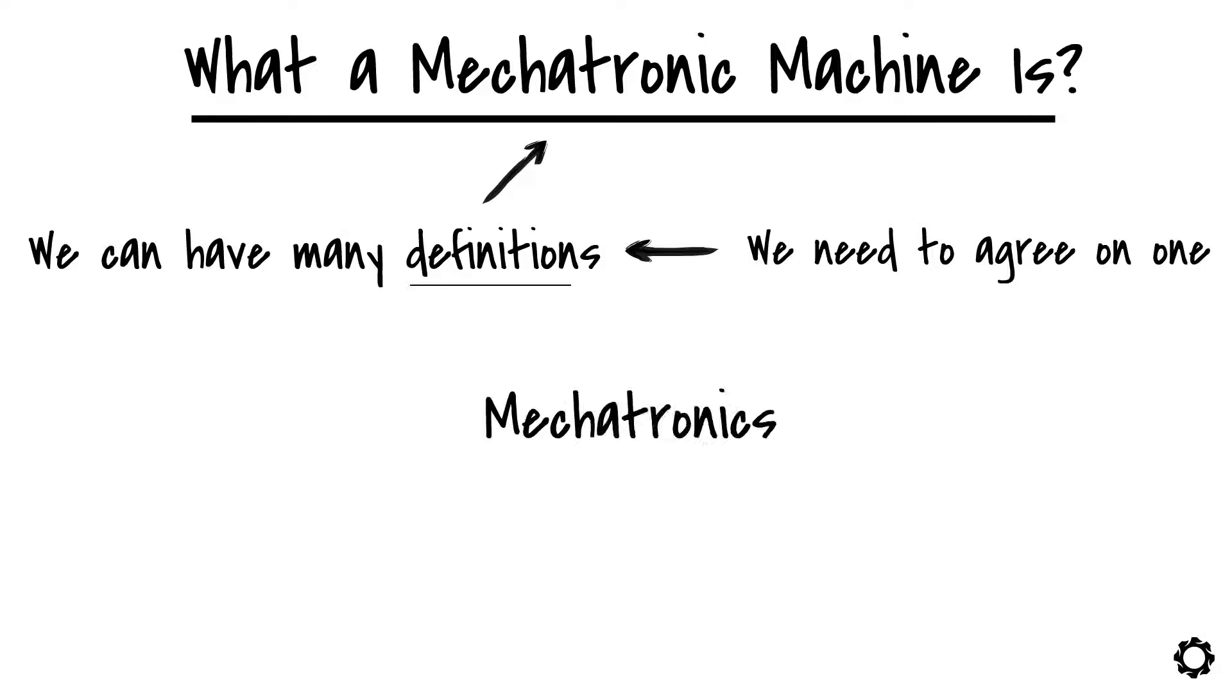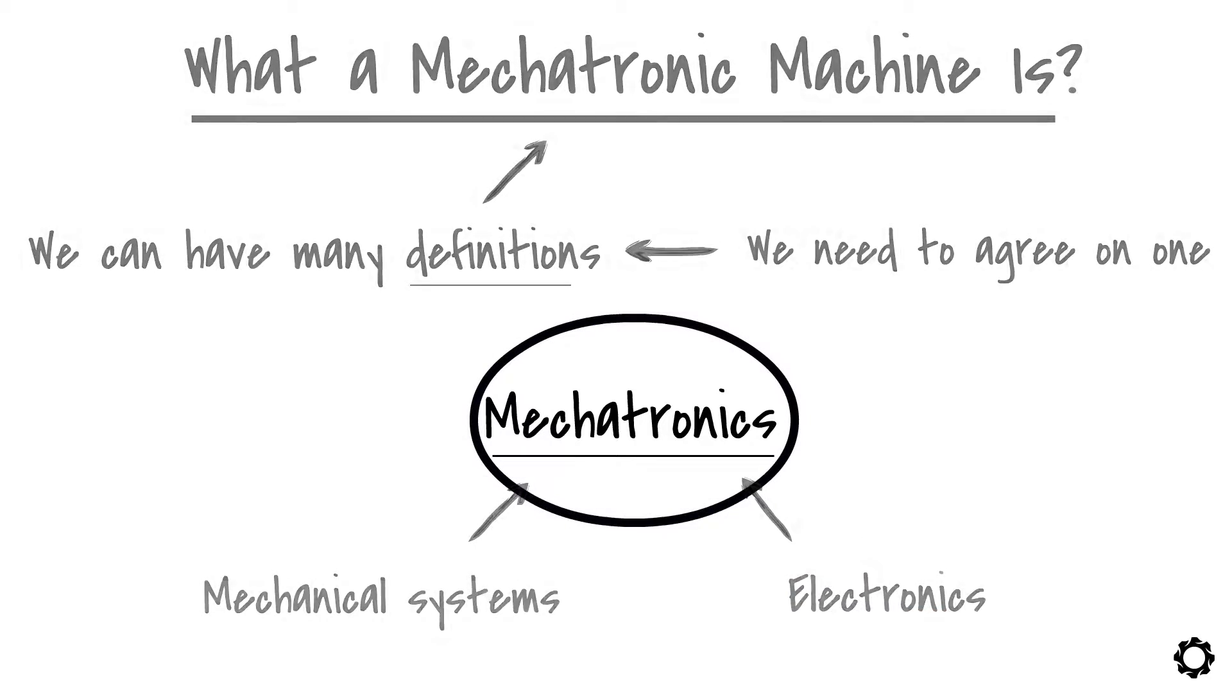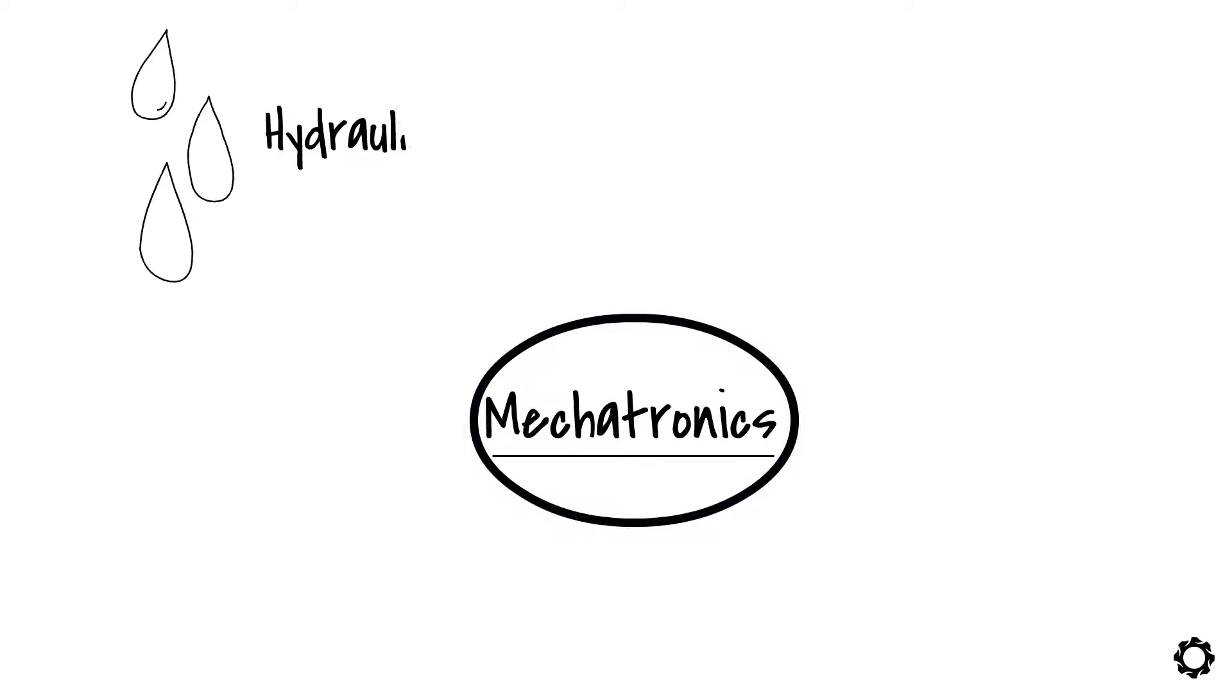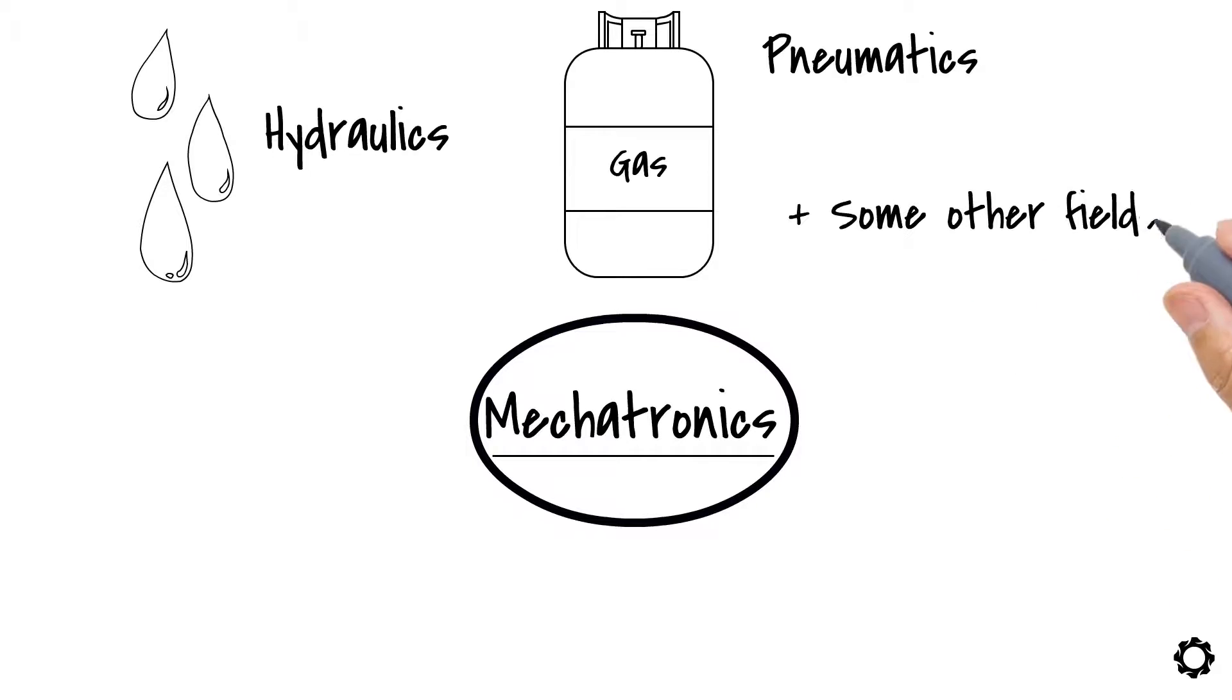If we look at the name, we'll see that the word mechatronics might come out of a combination of mechanical systems and electronics. And that's right, that is basically it. However, it might also include some hydraulics or pneumatics, just to mention some other fields.